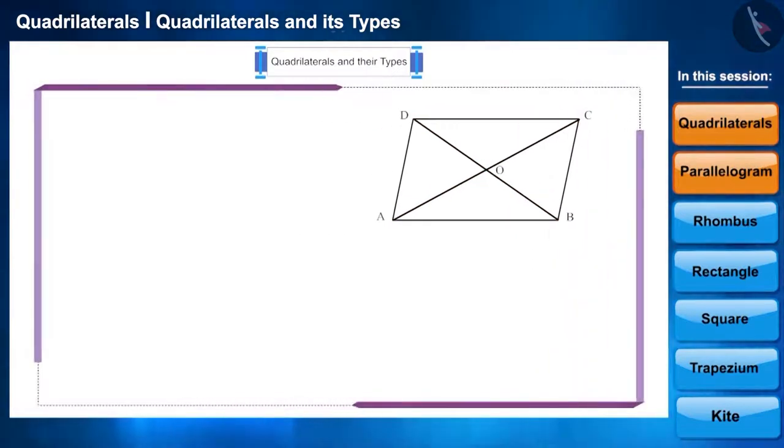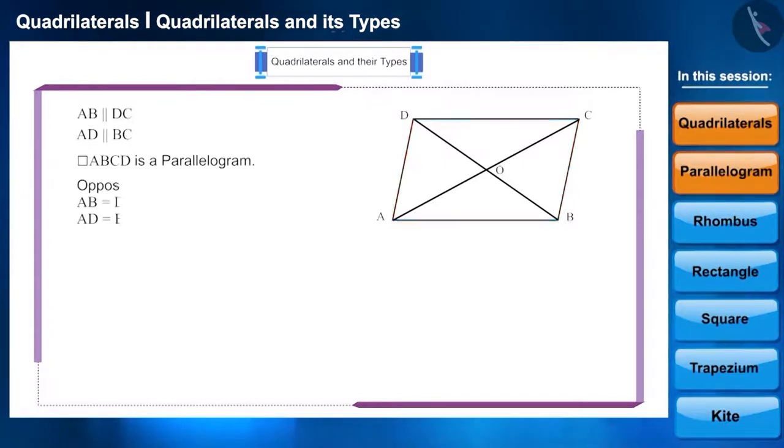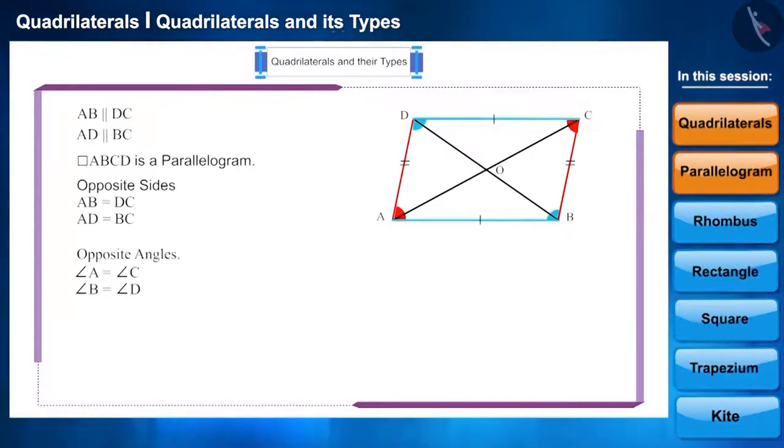Friends, we know that opposite sides and opposite angles in a parallelogram are equal, and its two diagonals bisect each other.